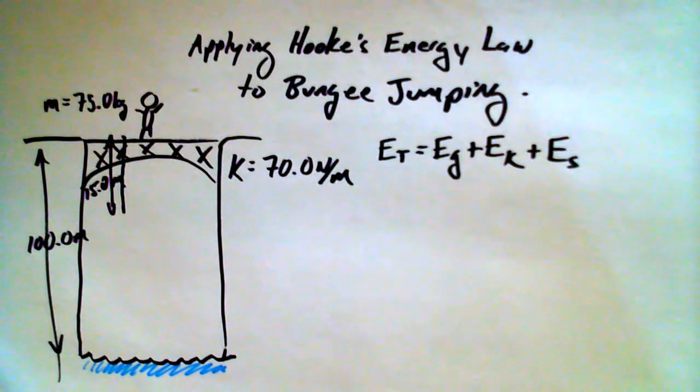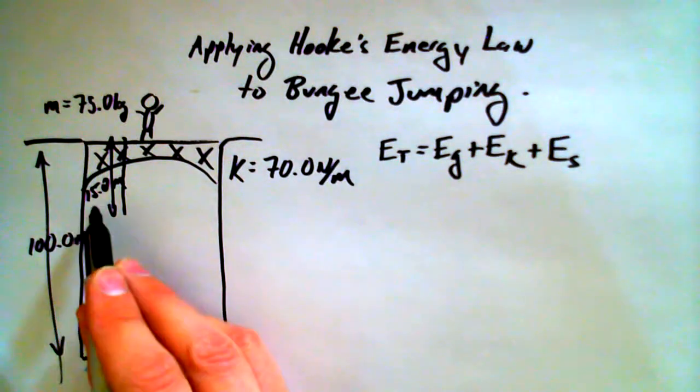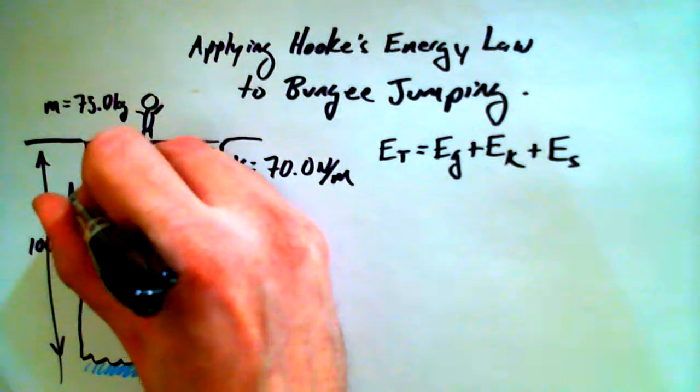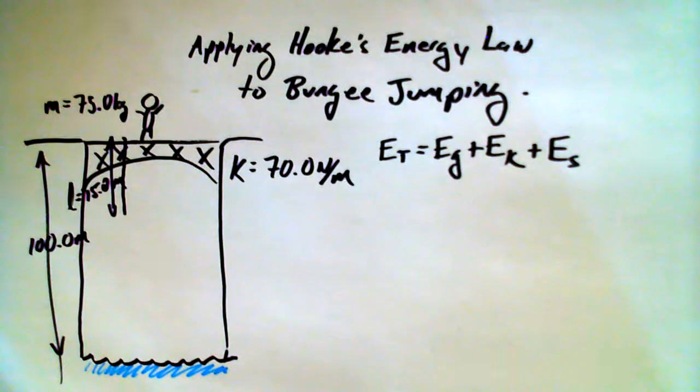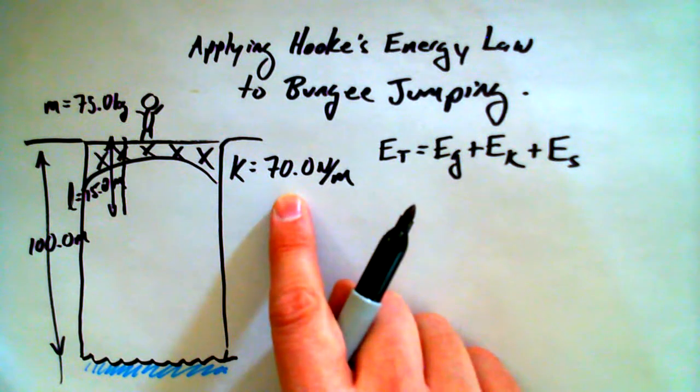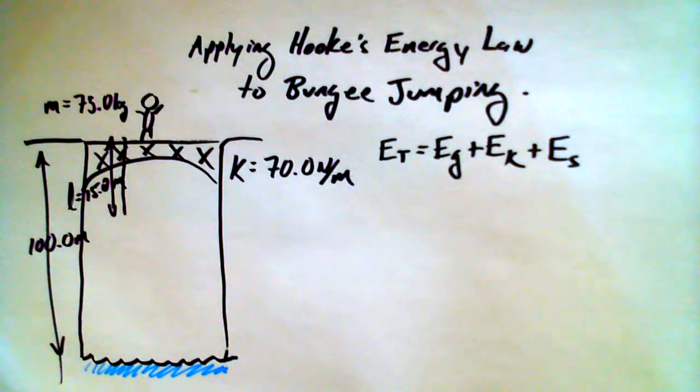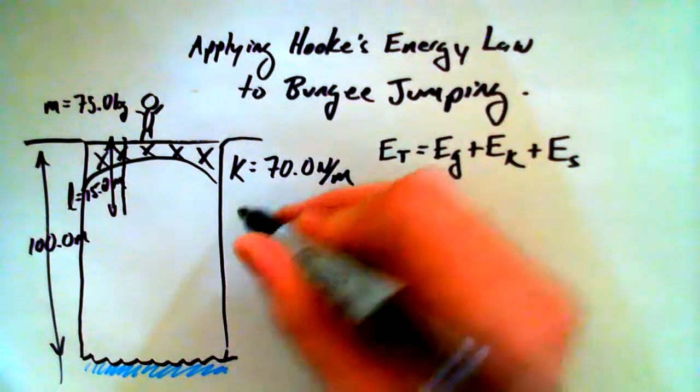So we have this person that's 100 meters above the ground with a bungee cord that's 15 meters long when it's slack. Maybe we'll call it the L value. The length of bungee cord is 15 meters long when it's slack. And we know the elastic potential energy for this, or the elastic potential constant, or spring constant for this bungee cord is 70 newtons per meter. We know the mass of the person that's going to be jumping off of this bridge.